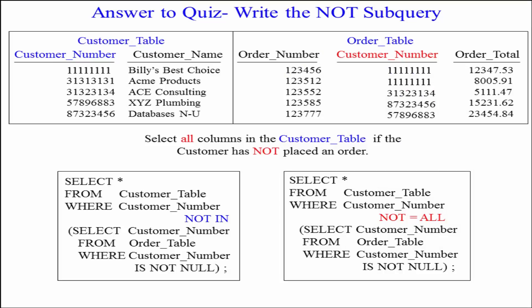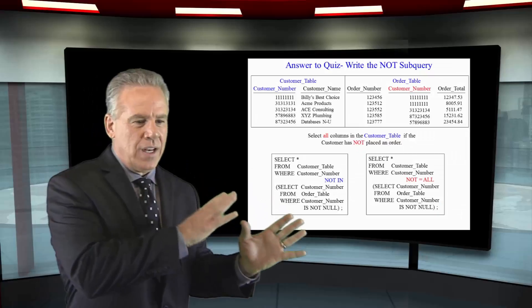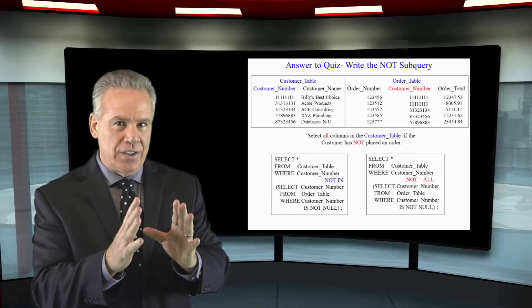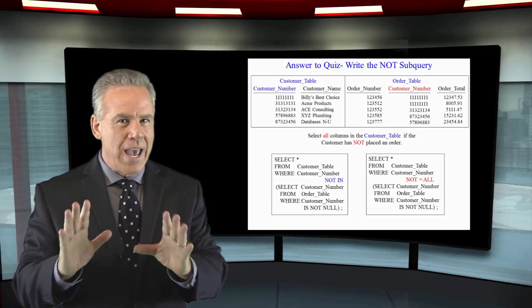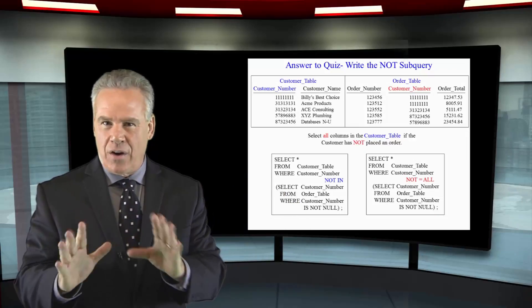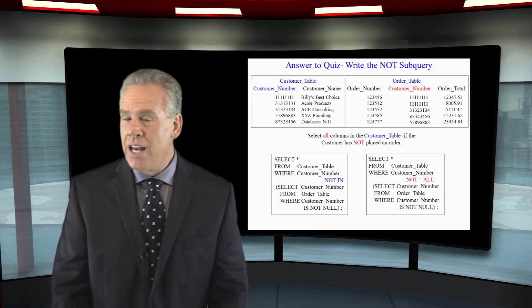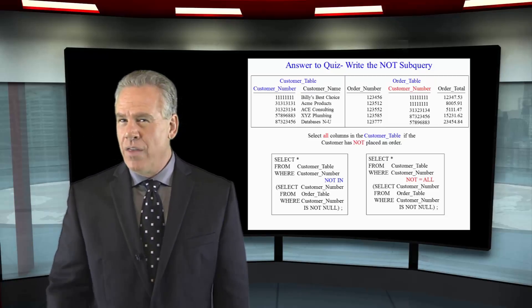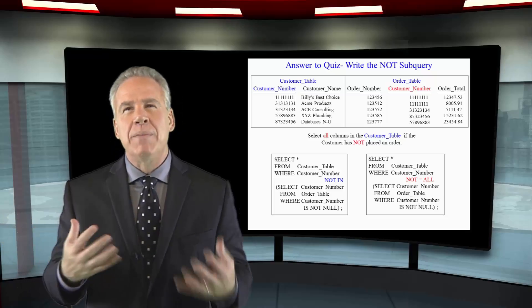A null value means there's nothing there. And if you have an IN list and there's a null, it's not so bad — it doesn't care, it can still run. But when you have a NOT IN and there's a null, it's big problems. Let me explain it in a logical way.